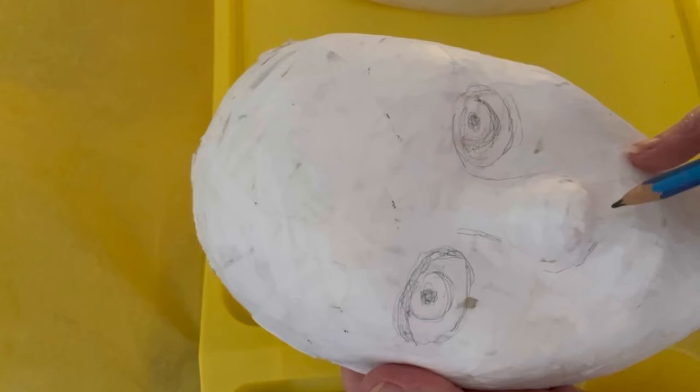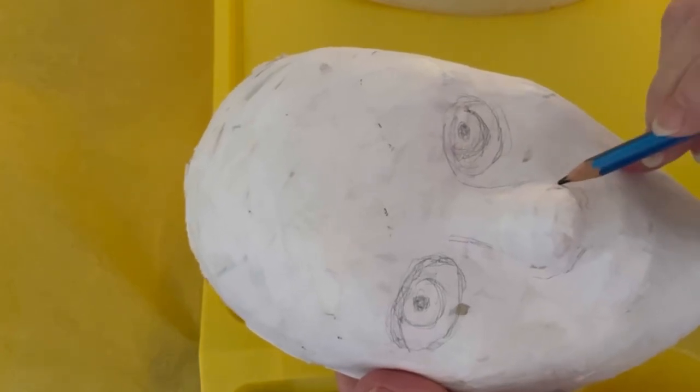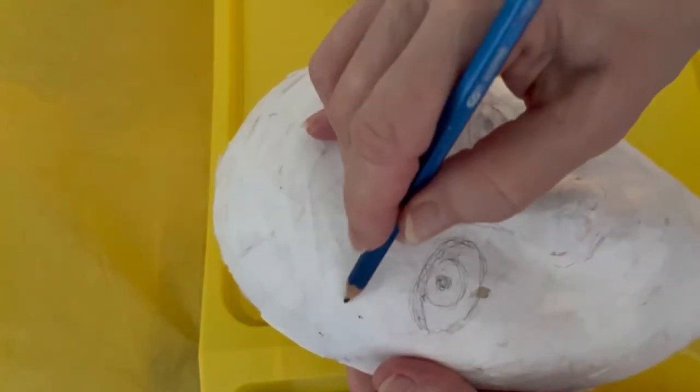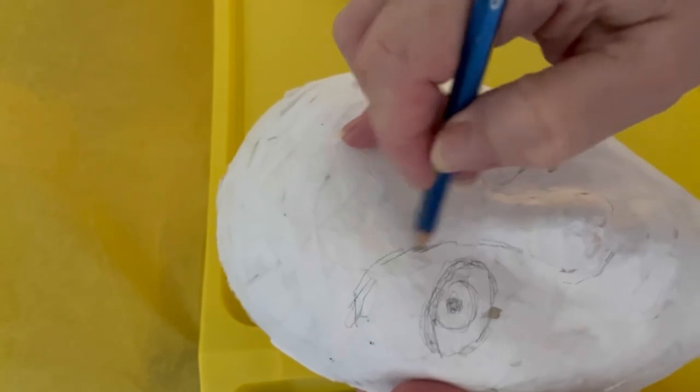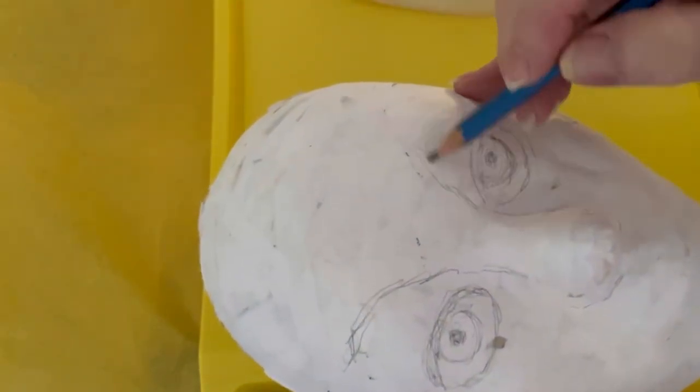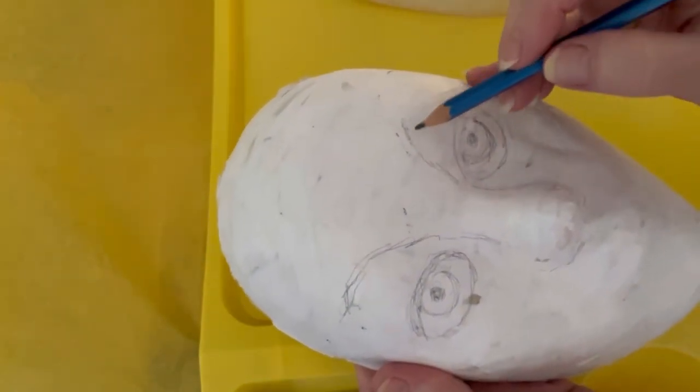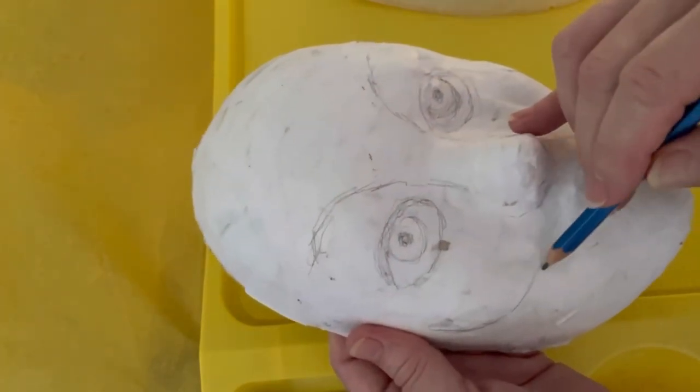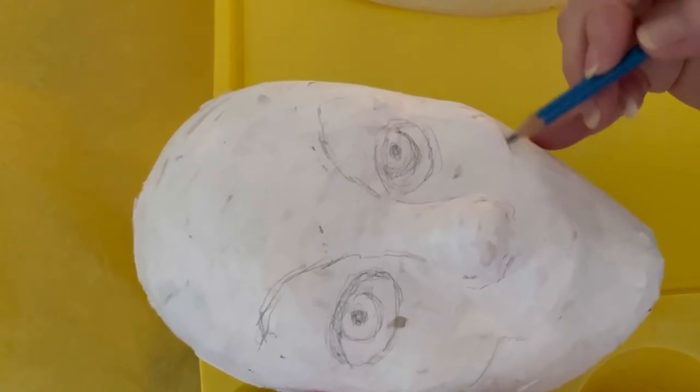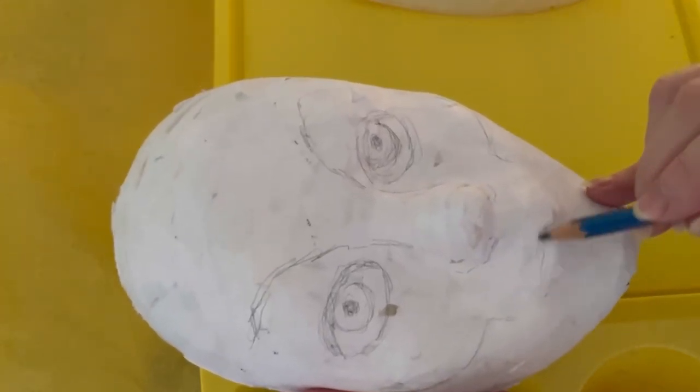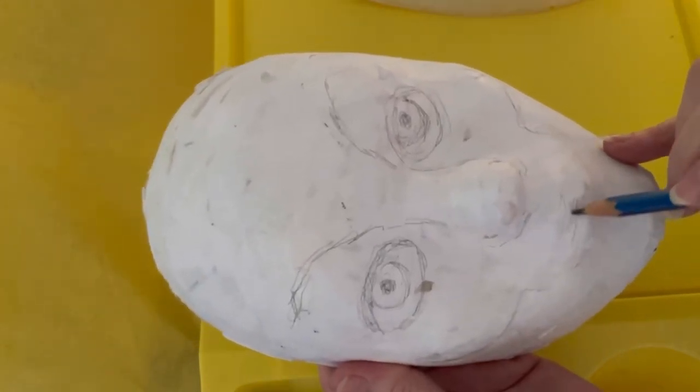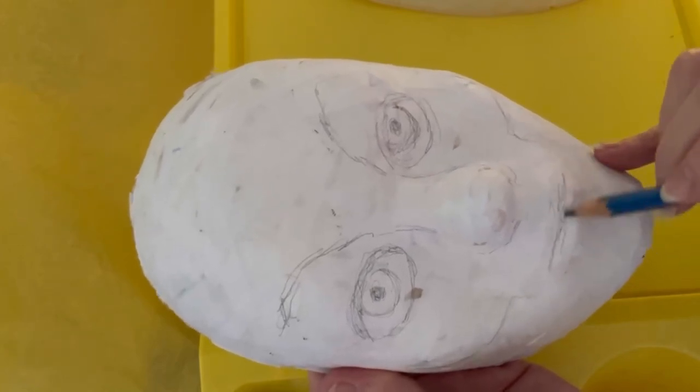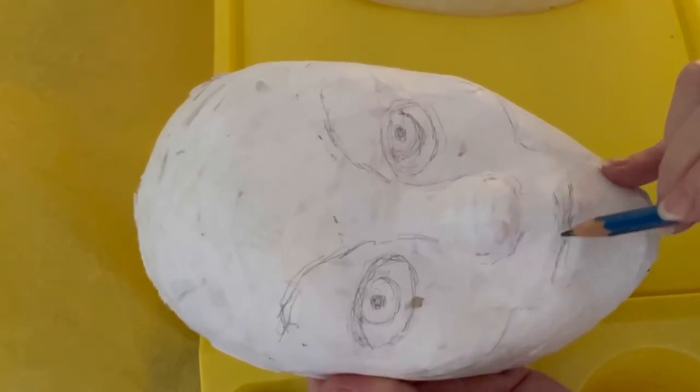You can add ears, horns, eyebrows, hair, mustaches, beards, fangs. You can cover it up and turn it into a scarecrow. You can make a clown face, a skull face, a happy face, comedy or tragedy. It's all up to you.